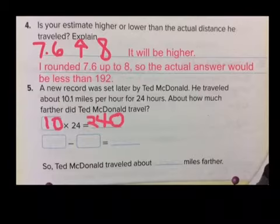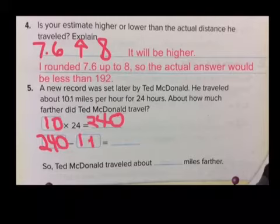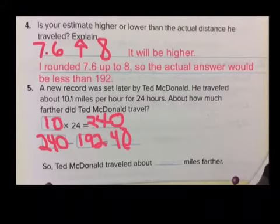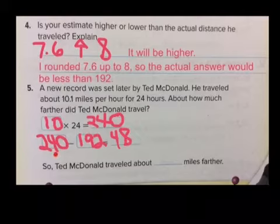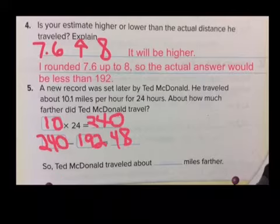When we look for the difference — about how much farther — we take the higher value, 240, and subtract the lower value, 192. We get a difference of 48. We go down to 200 — that's a drop of 40 — then down another 8 to get to 192. So Ted McDonald traveled about 48 miles further.